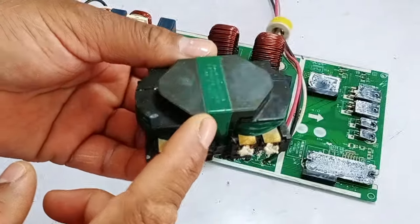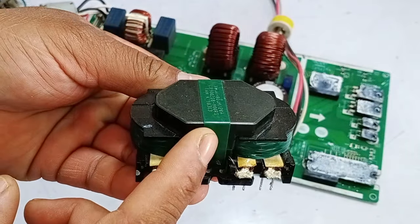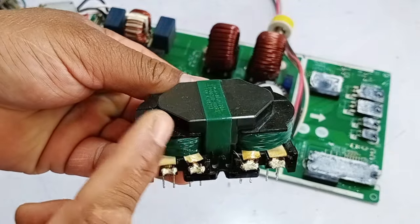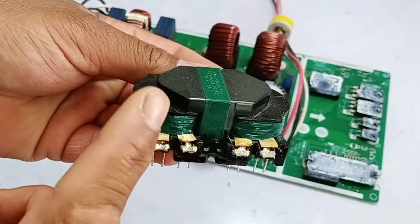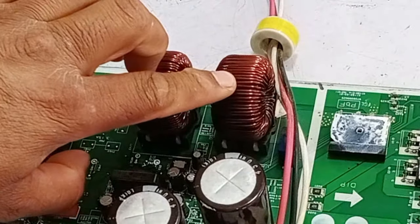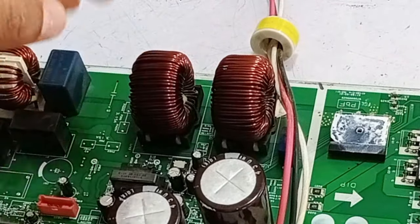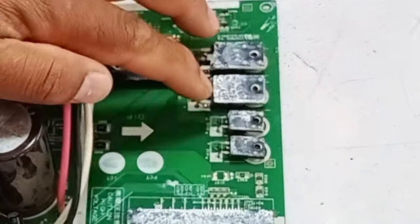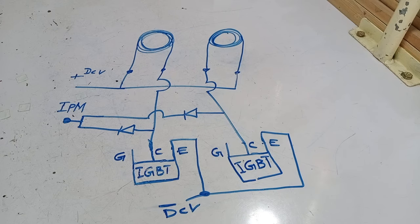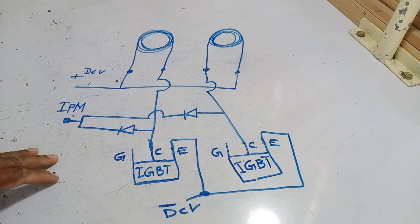This type of reactors, which are also dual reactors but packaged in a single case, are used in these inverter circuit boards. But this reactor and the reactors in the circuit board are a little different. In this circuit board, two reactors and, with it, two IGBTs and two diodes are used. I will explain all these dual components installed in this circuit board through the circuit diagram I have drawn.